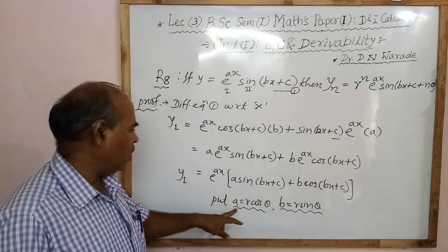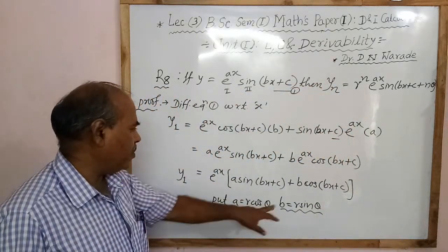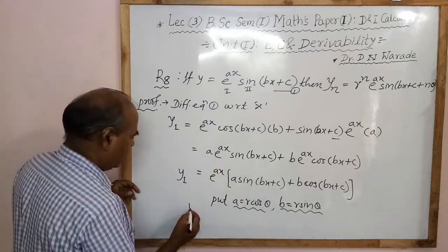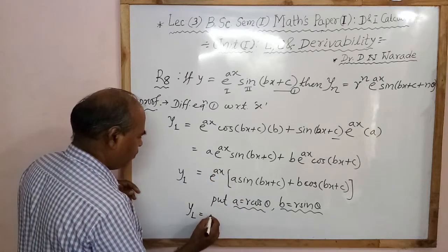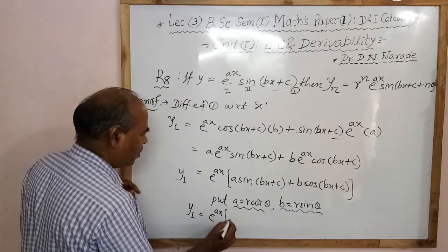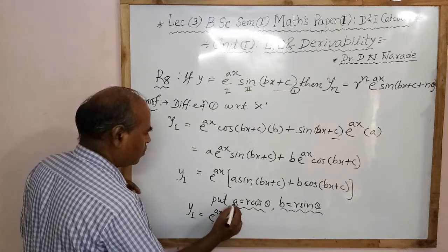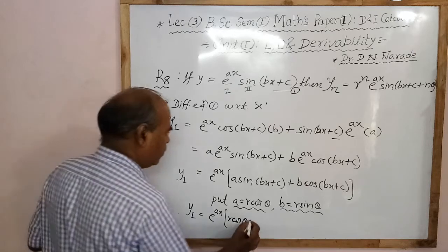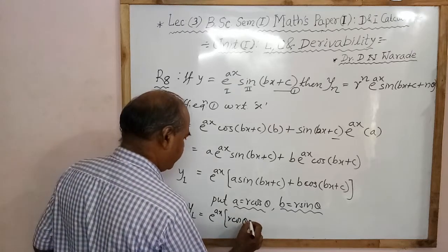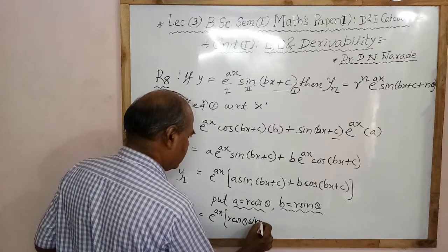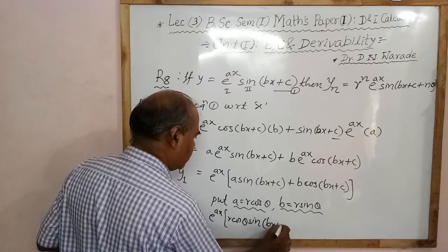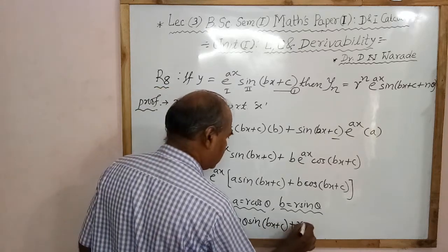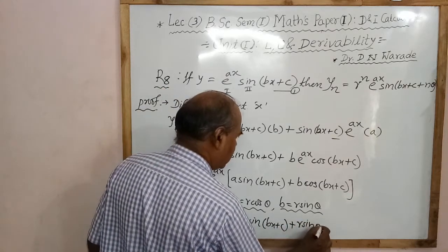Here a is equal to alpha theta and b is equal to alpha theta. In this equation, therefore y1 is equal to a to the power x, where a equals alpha theta, sine of bx plus c, and b equals alpha theta.